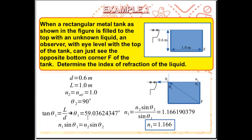This gives theta 1 equal to 59.036 degrees. Then using the law of refraction, n1 sin(theta 1) = n2 sin(theta 2), the only unknown is n1, the index of refraction of the unknown liquid. Substituting in the known values, we calculate n1 to be equal to 1.166.